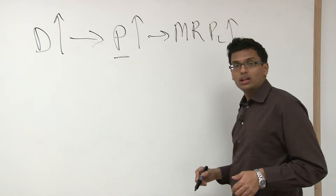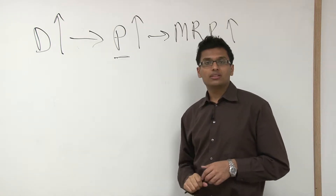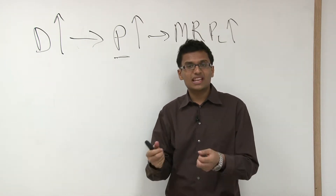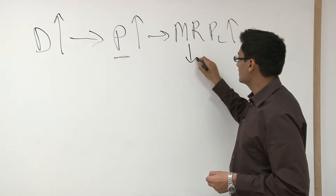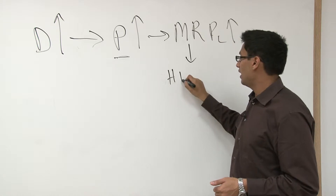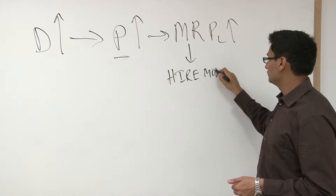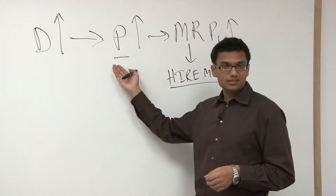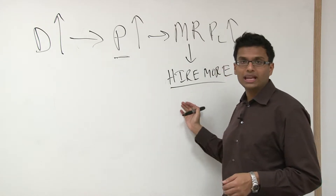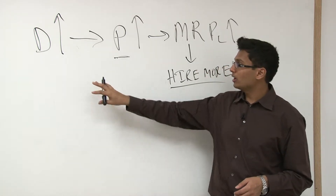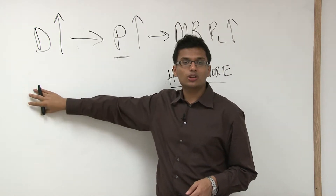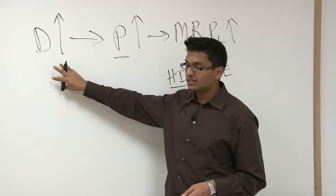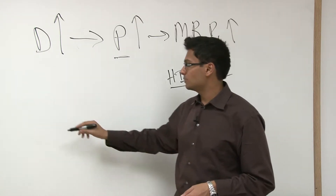If MRPL goes up and firms have more revenue per unit of labor, they're going to hire more people. The excess money from profits goes into labor because they want to keep riding on that demand — hire more people, create more M&Ms, make more money because demand has gone up. This is the concept called derived demand.